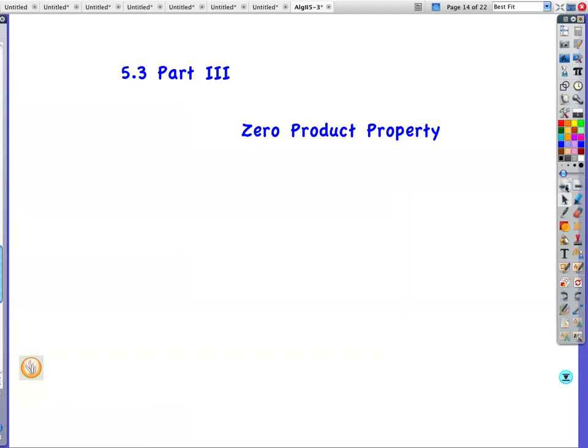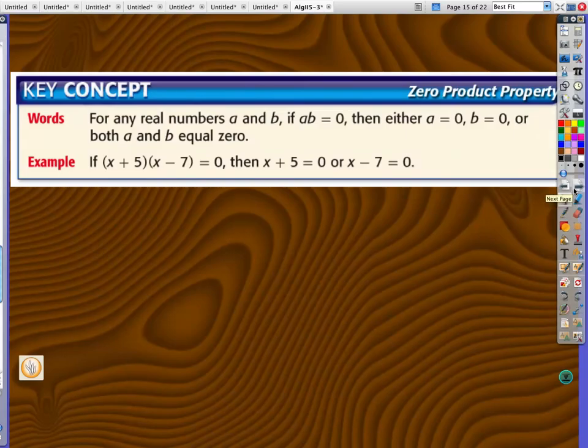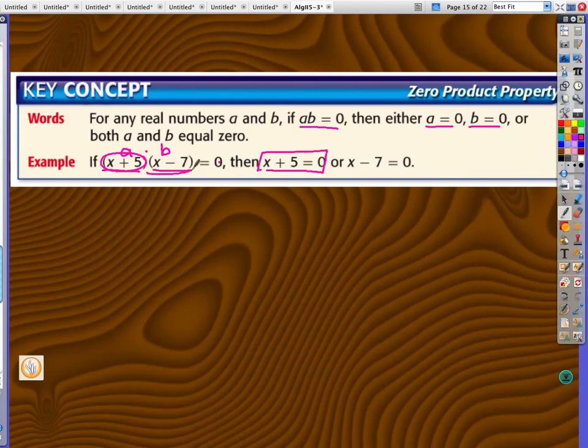5.3 the zero product property. If a b equals zero then either a equals zero or b equals zero, or both a or b could be zero. So basically this is a times b equals zero, so either x plus 5 equals zero or x minus 7 equals zero.